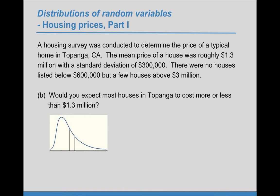Part B: Would you expect most houses in Topanga to cost more or less than $1.3 million? $1.3 million, remember, is the mean. So here having this sketch really helps.